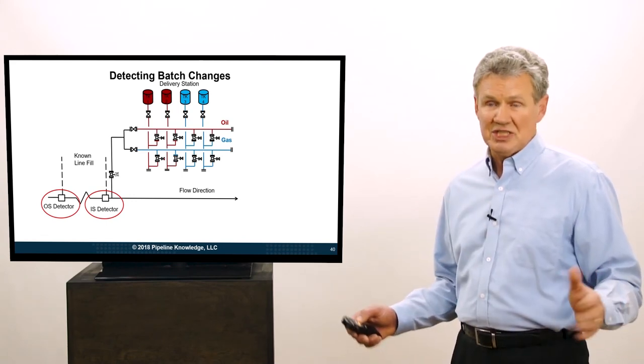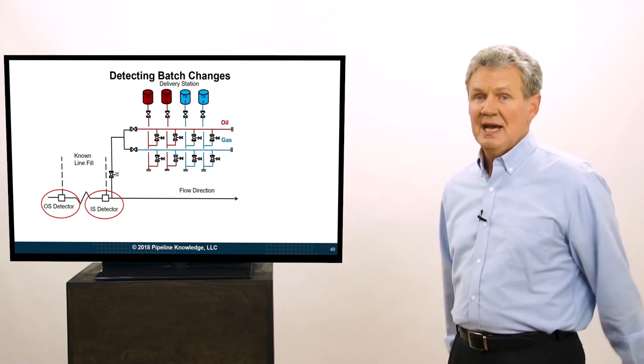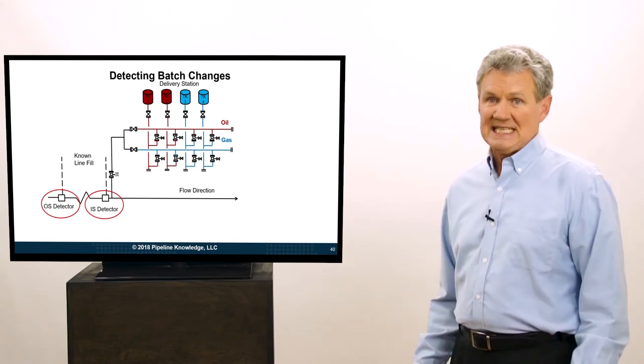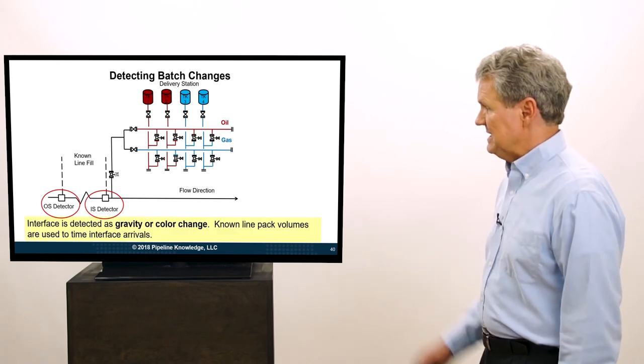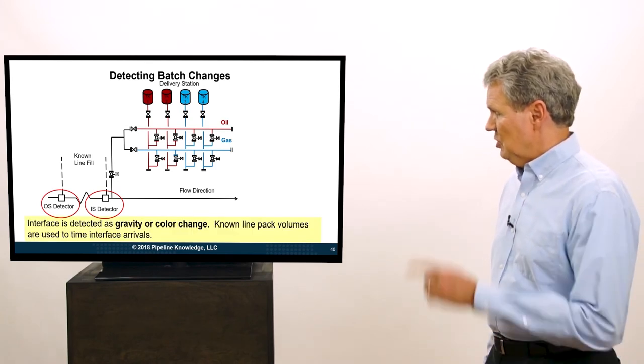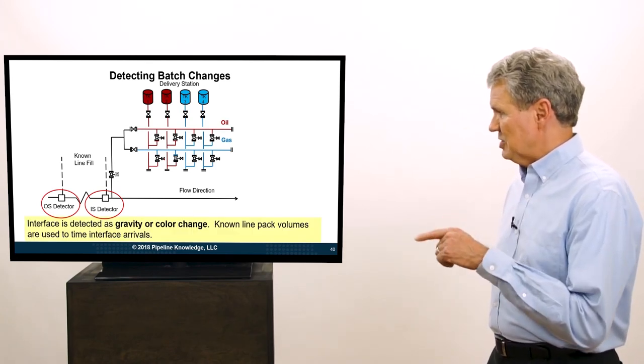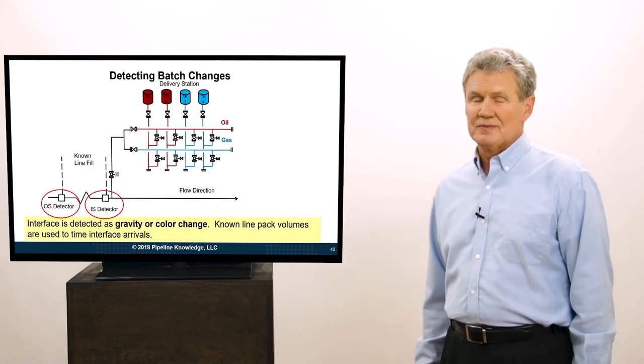You'll have to know with your own SCADA system whether that's the case or not. Varies by applications, varies by SCADA systems. The interface is detected as gravity or color. We have a known line pack. Volumes are used to time the interface arrivals.